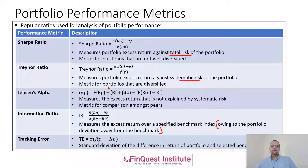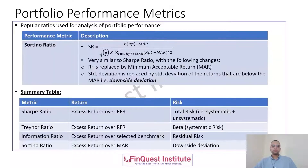Tracking error is the standard deviation of the difference between our selected portfolio and the selected benchmark. It is essentially the denominator of the information ratio. When measuring portfolio performance, tracking error is one of the useful metrics analysts can use whenever comparing portfolio performances across two portfolios.